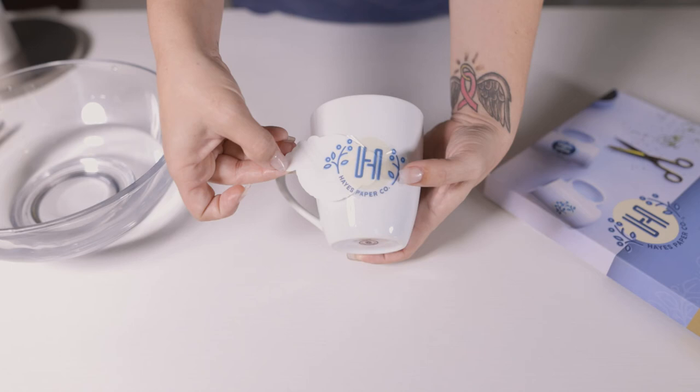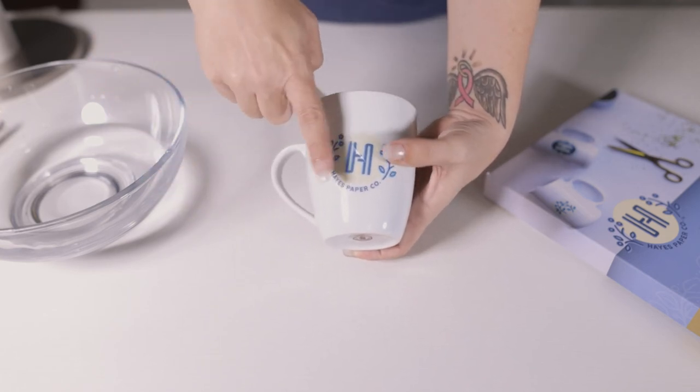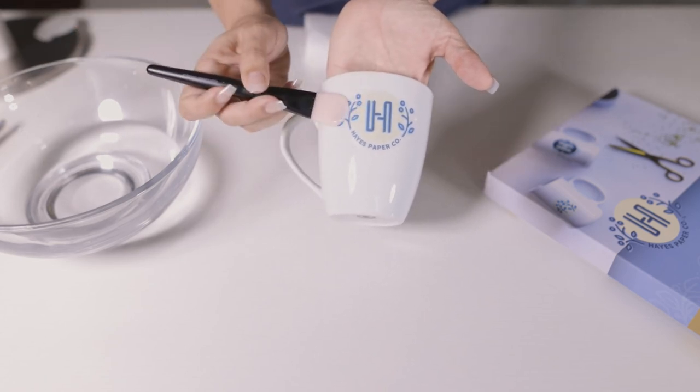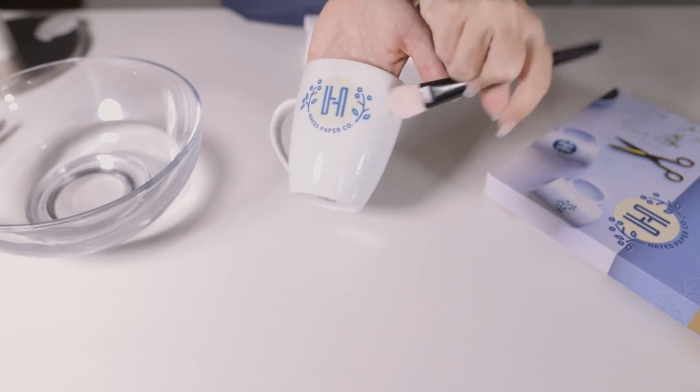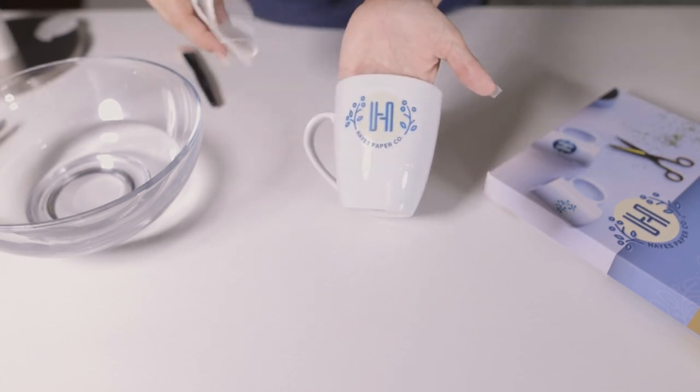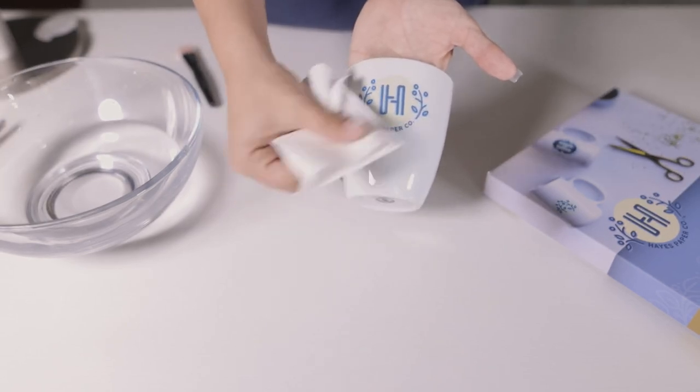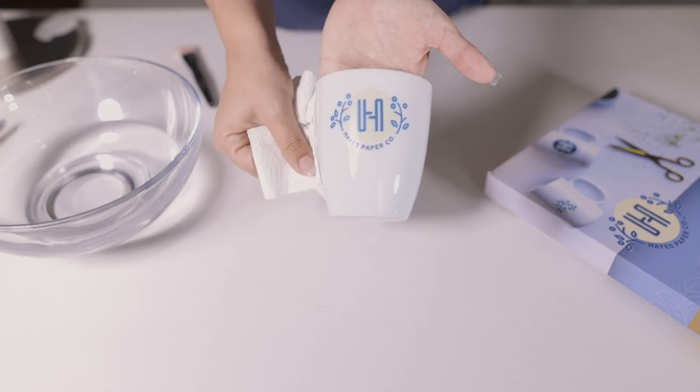Use your finger or a squeegee tool to push out all the excess water from behind the decal. Once you have removed the excess water, take a paper towel or a small cloth to gently press down on the decal. This will help ensure that the adhesive on the back of the decal gets good contact to the object it is being applied to.